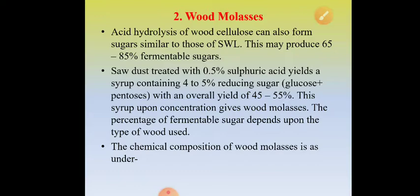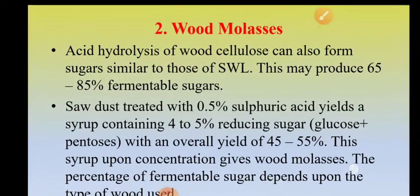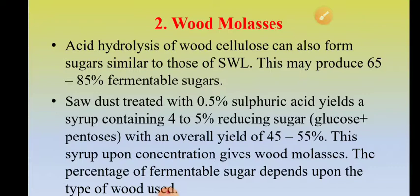The second category of cellulosic material is wood molasses. Sugars similar to those present in sulfite waste liqueur can also be obtained by acid hydrolysis of wood cellulose. Acid hydrolysis of wood cellulose produces 65 to 85 percent of fermentable sugars.